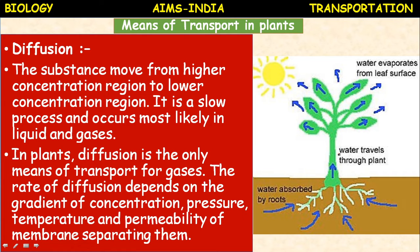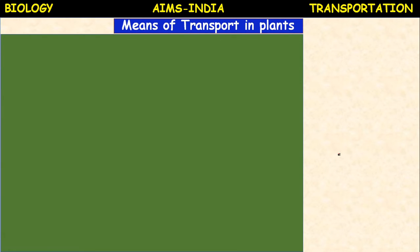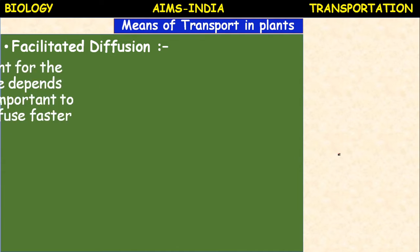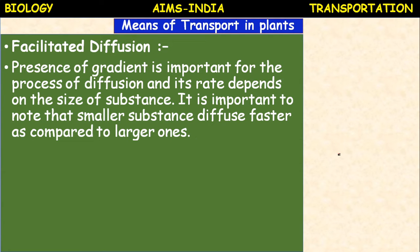Water absorbed by the roots by osmosis then travels through the plant, and water evaporates from the leaf surface through a process called transpiration. This transpiration maintains the continuous column.